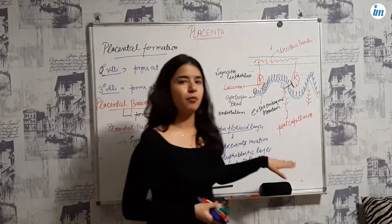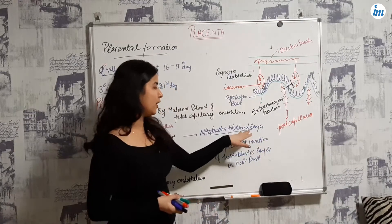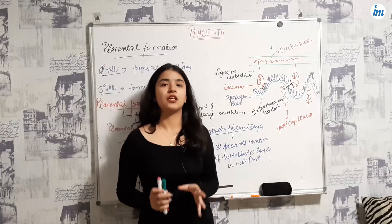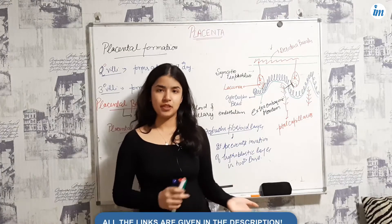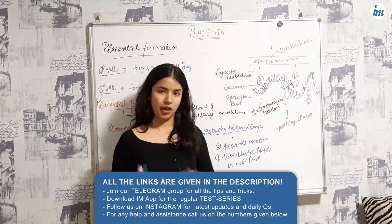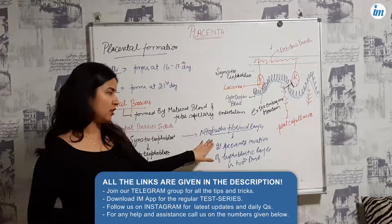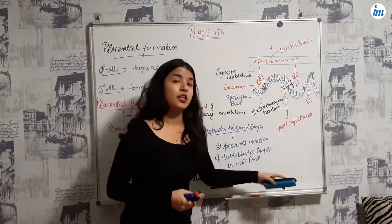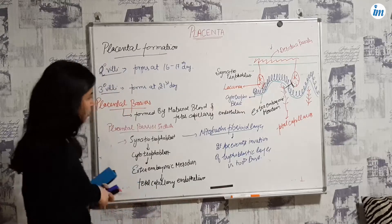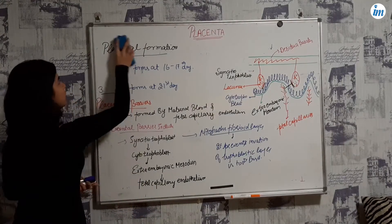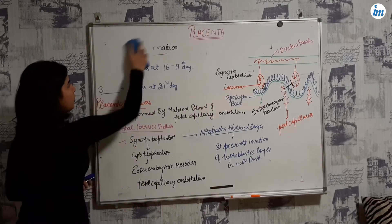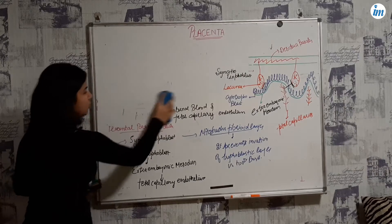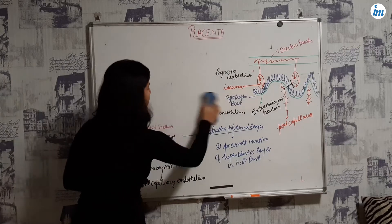If the Nitabuch's fibrinoid layer is absent, serious conditions occur: placenta accreta, increta, and percreta. I will discuss placenta accreta, increta, and percreta in my next video.